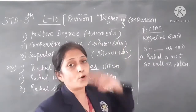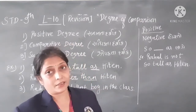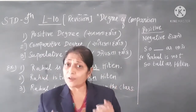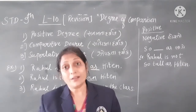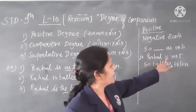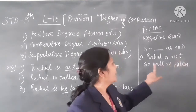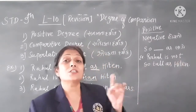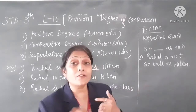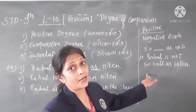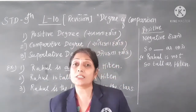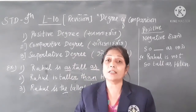If you do not have a negative, then the sentence will not be negative. For example: 'Rahul is not so tall as Hiten' — this is the Positive degree with a negative. So in this way Positive, Comparative, and Superlative degree are three groups.